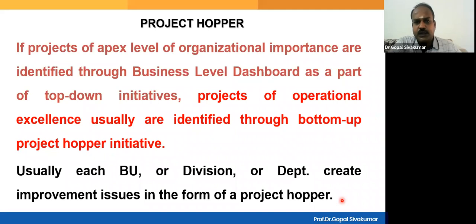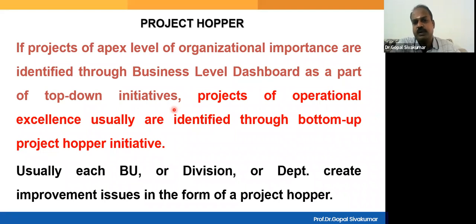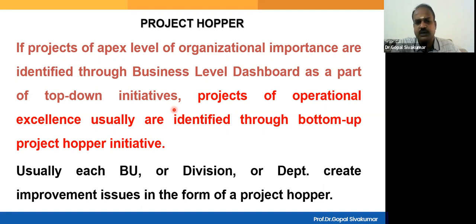While creating the Project Hopper, there are two approaches. At the operational level, Voice of Customer, Voice of Business, and Cost of Poor Quality data are used to identify projects — this is a bottom-up initiative. At the apex level, projects are identified through a business-level dashboard and financial reports — this is a top-down initiative. Whether top-down or bottom-up, projects are listed in the hopper, prioritized, and then executed. Each business unit or department creates improvement issues in the form of a Project Hopper for execution by the concerned project team.